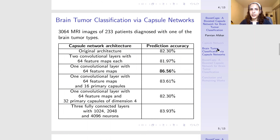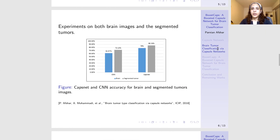Using the basic capsule network architecture, we tried to see if capsule networks can overcome CNNs in a medical imaging problem like brain tumor classification. After exploring a few possible architectures, we could obtain 86% accuracy using one convolutional layer with 64 feature maps. We also observed that CAPSnet can overcome CNNs in two scenarios: when the model is fed with the whole brain image, and when the model is fed with the segmented tumor. In both scenarios, CAPSnet is more successful compared to the CNN.